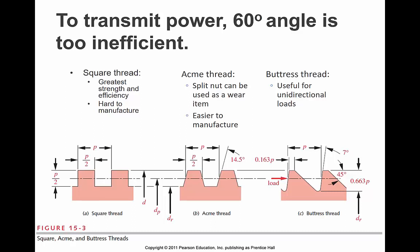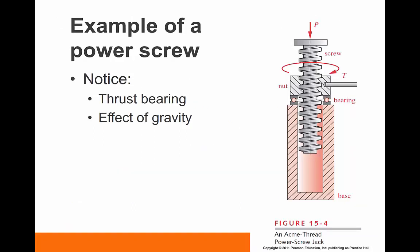So the picture on the right shows an example of a power screw. This is an ACME thread power jack. The way this is going to operate is you're going to grab hold of the handle and you're going to apply a torque on this nut. And as you twist the nut around, it's going to force the screw to rise against the load. That's what we're going to call up. And then if we go the other direction, it'll lower the screw or going the same direction as the load.